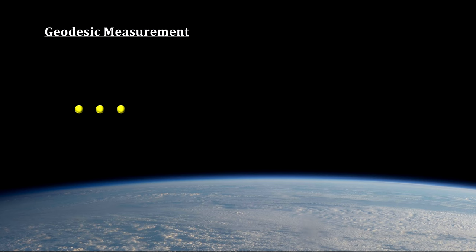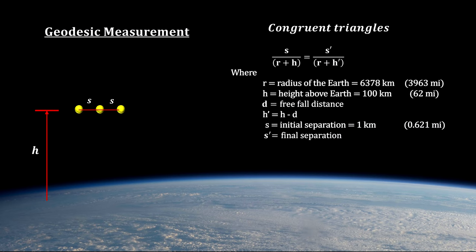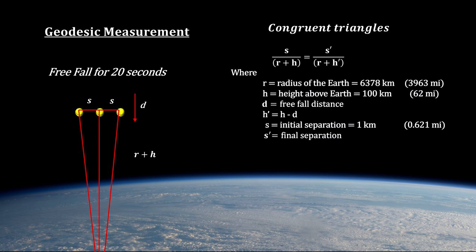If we place three test particles horizontally along an east-west line, with the same starting separation, we can see what happens when they fall freely along their geodesic lines towards the center of the Earth.